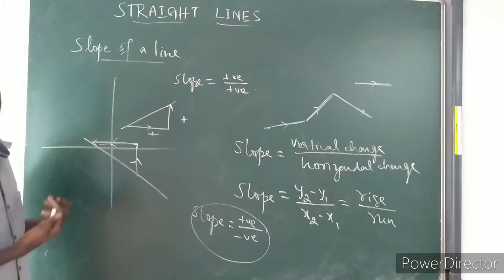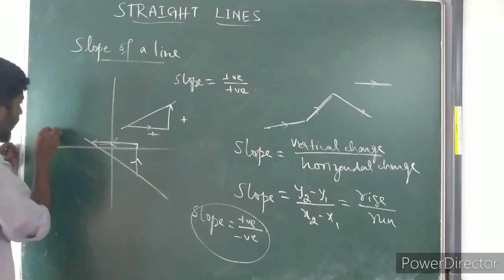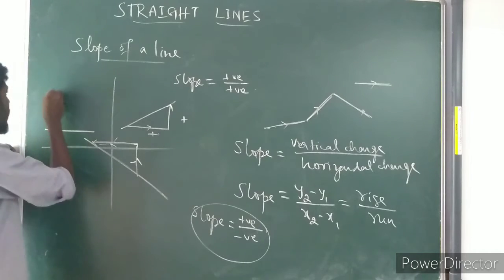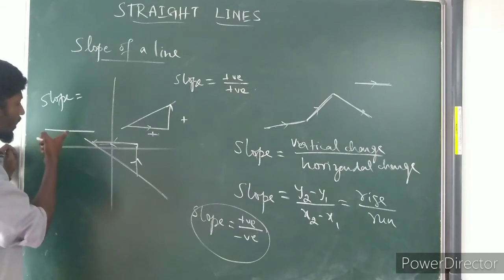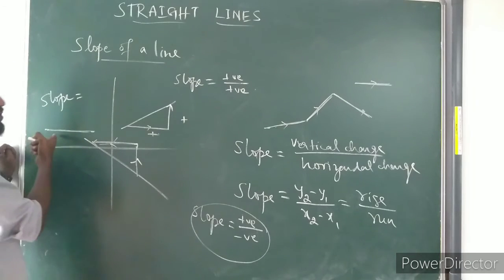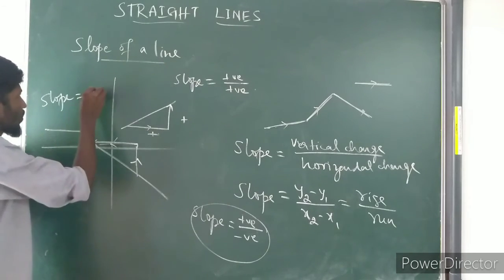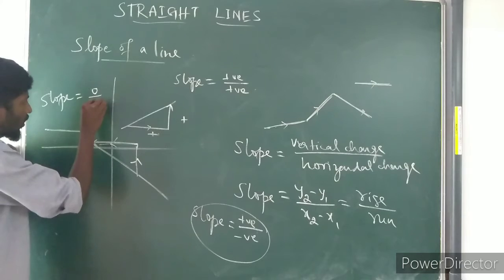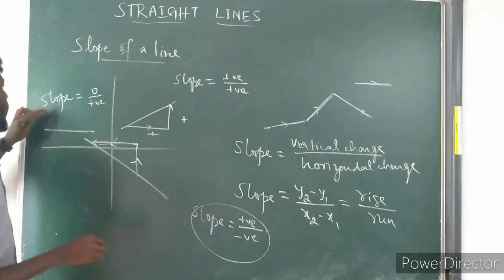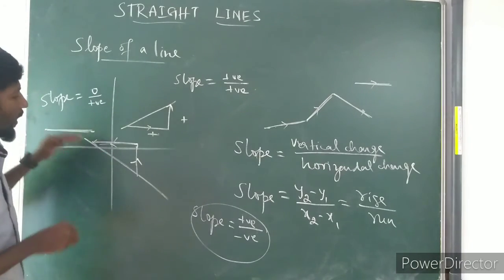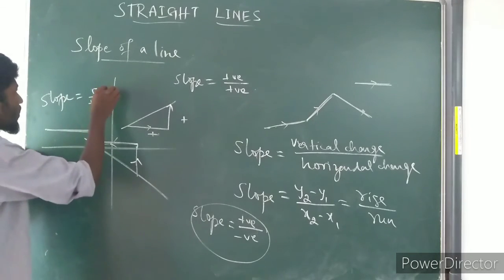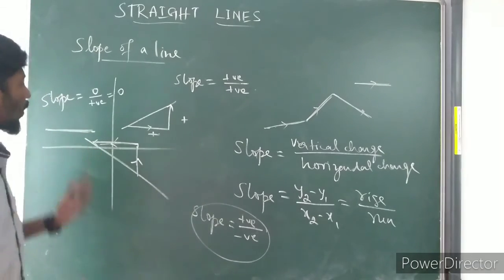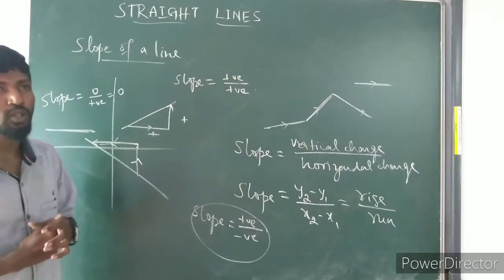Suppose if I take a line parallel to the x-axis. If I want to find the slope for this line, here there is only run — there is no rise. So rise is 0, and slope equals 0 divided by run, which equals 0. So when a line is parallel to the x-axis, the slope of that line is 0.